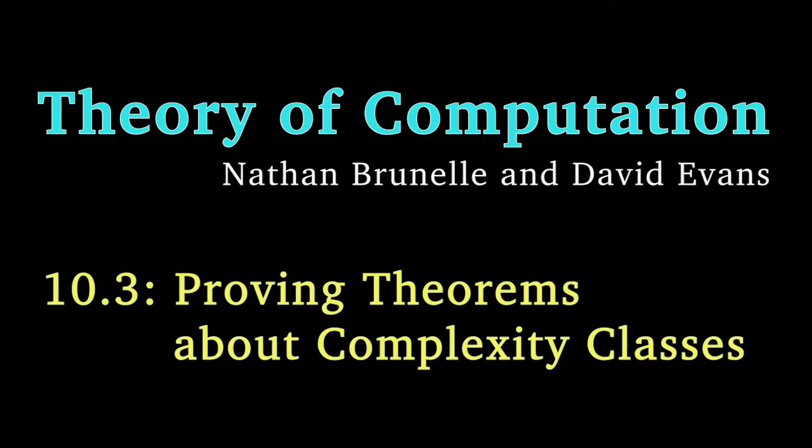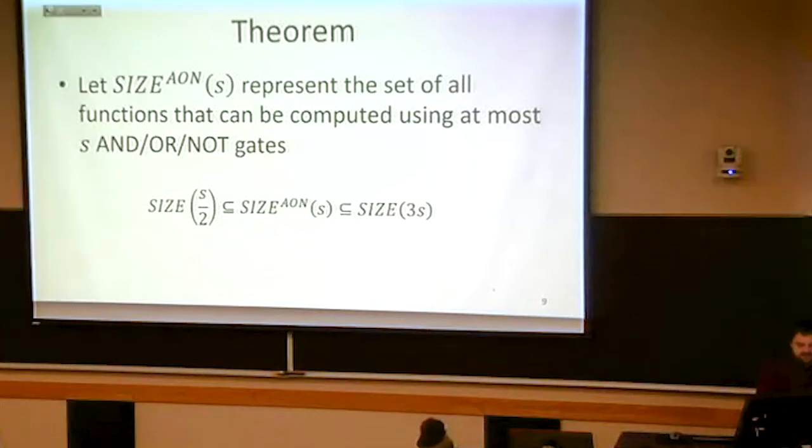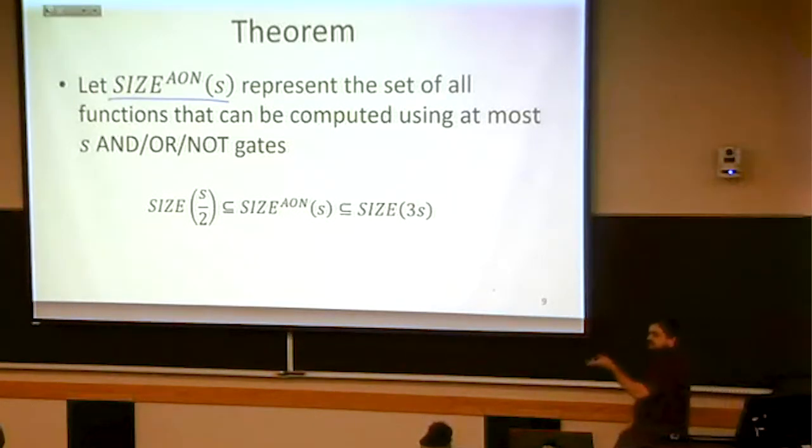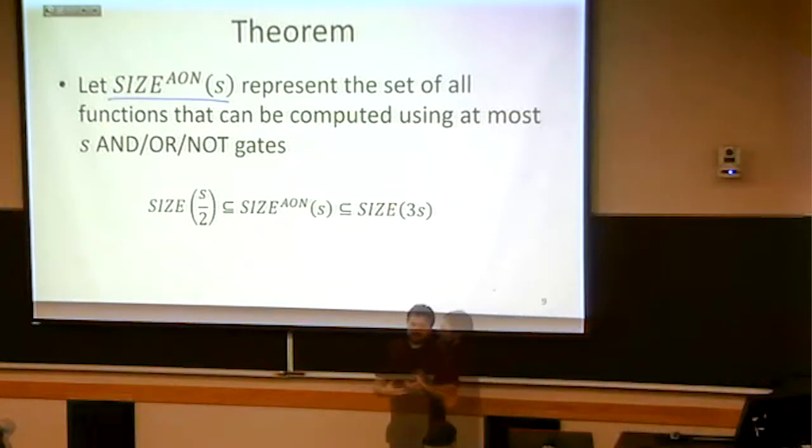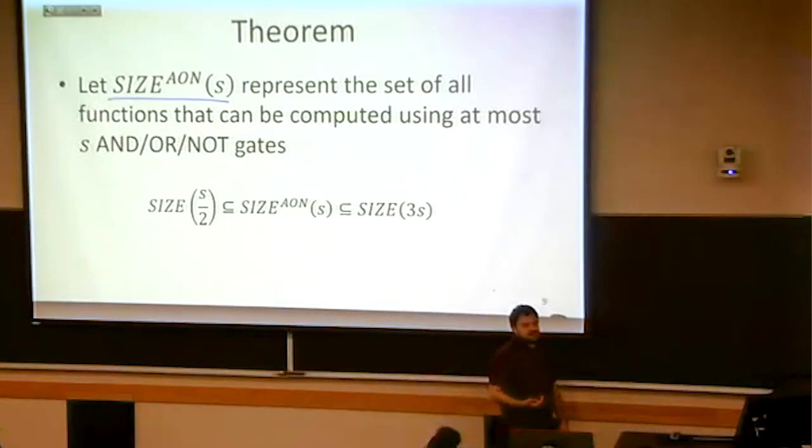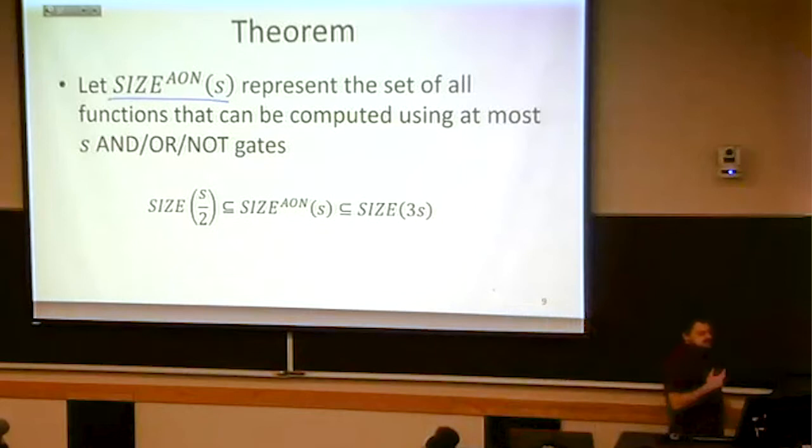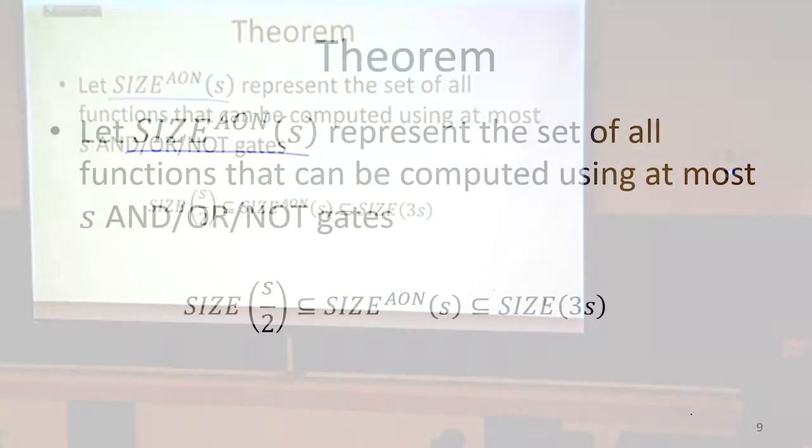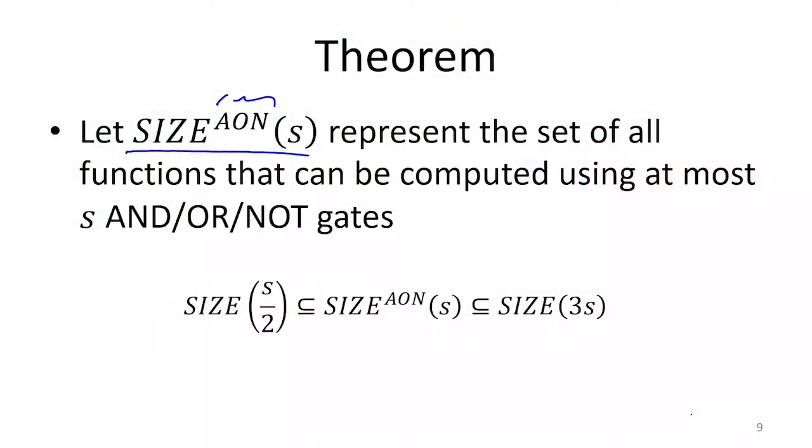We already know enough where we can start to prove things about complexity classes. I'm going to say that SIZE superscript AON of S is kind of like the SIZE S that we saw before, the set of all functions that require at most S gates to implement. But SIZE without the AON meant NAND gates are what we were counting. I'm going to say that with this superscript AON, we are going to be counting the number of AND, OR, NOT gates that are required.